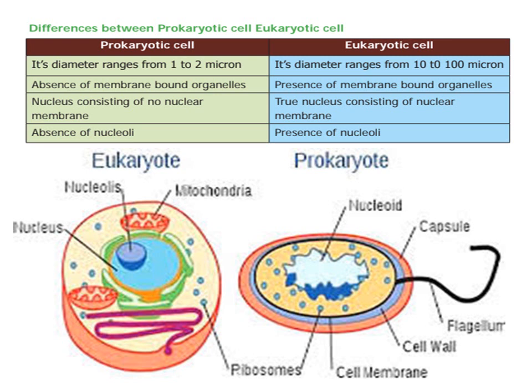Now, the two cell types are different. The difference is that prokaryotic cells have a diameter ranging from 1 to 2 micrometers.